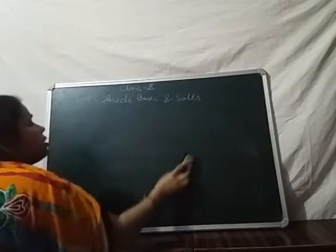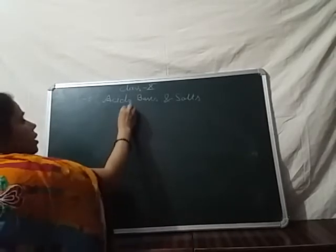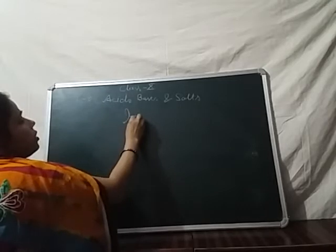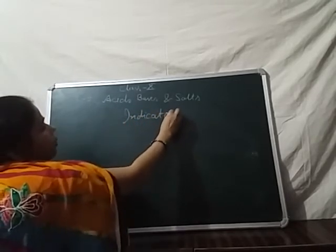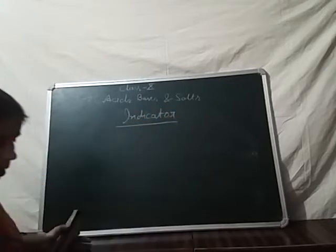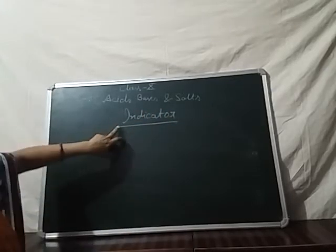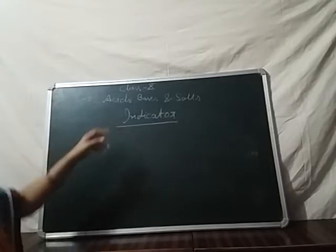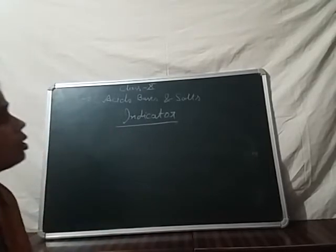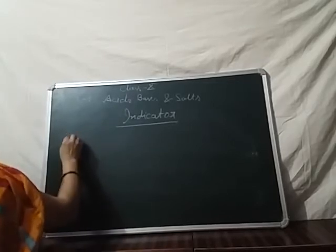Next, our topic is indicators. What is an indicator and what are the forms of indicators? Indicators are generally substances or solutions which are used for the detection of the acid or basic property of a solution. Most indicators are generally classified into three categories.